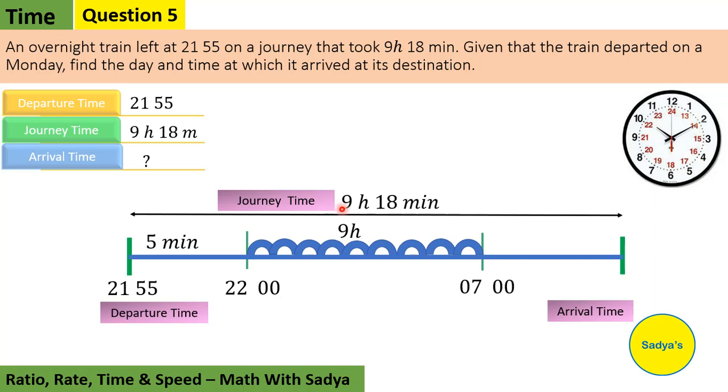Now the total journey time we had to cover is 9 hours and 18 minutes. We've covered 9 hours, and in minutes we've covered 5 minutes out of 18, so how many minutes remain? 13 minutes. So 7 o'clock plus 13 more minutes means what time? It would be 7:13. So this means the arrival time is 7:13.